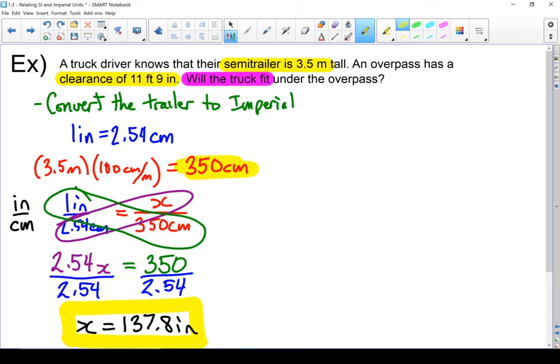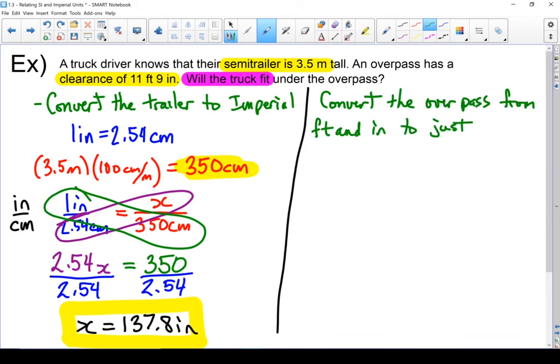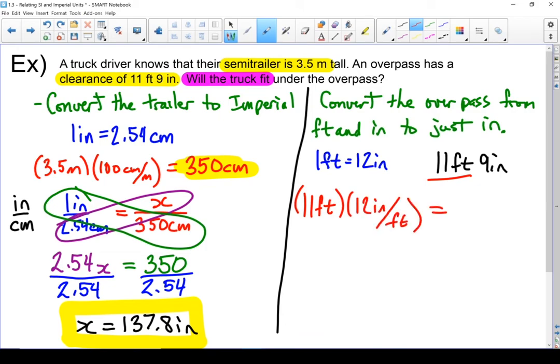How does that compare to the overpass? Because the overpass is written in feet and inches. So let's just take that overpass and convert it all the way down into inches. Okay I'm going to use one foot equals 12 inches and we're working with 11 feet 9 inches. I'm going to convert this 11 feet into inches and then add it on to that 9. So 11 feet times 12 inches per foot equals 132 inches. 132 inches plus 9 inches equals 141 inches.